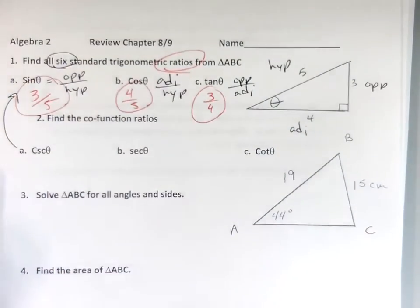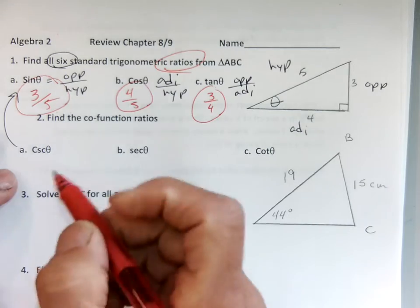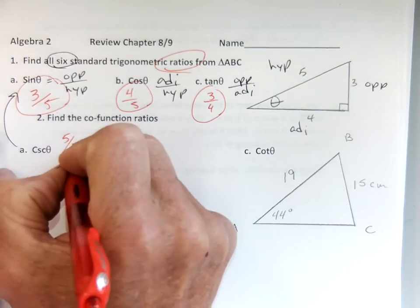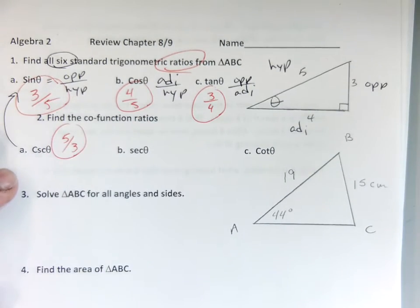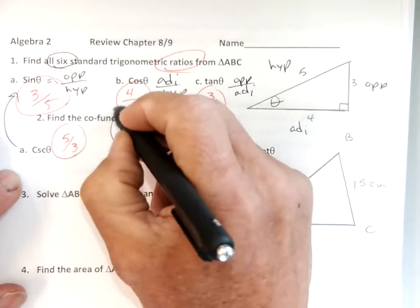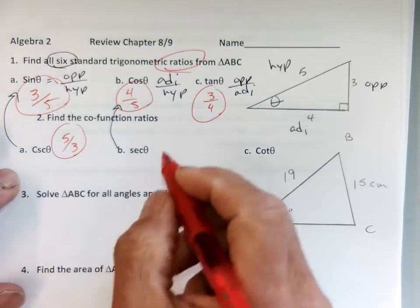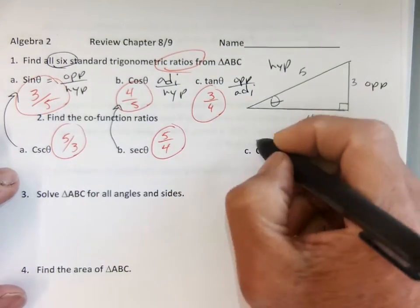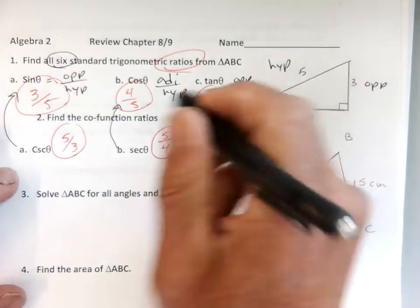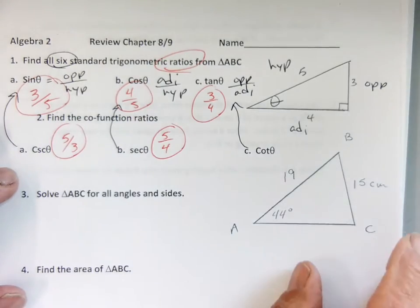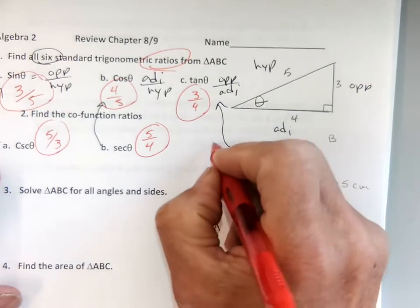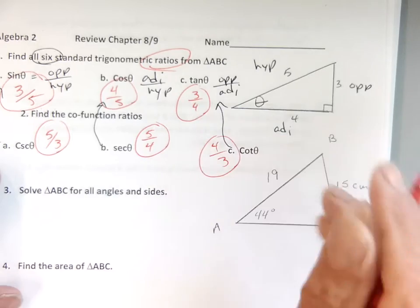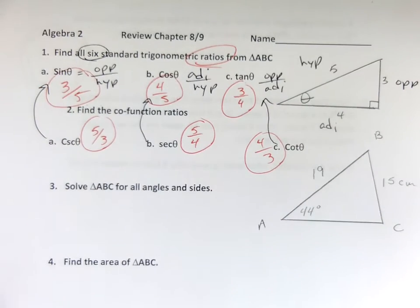Cosecant is just the reciprocal of sine — it's the hypotenuse over the opposite, so it's just going to be 5 over 3. Secant is just the reciprocal of cosine, so it's 5 over 4. And cotangent is just the reciprocal of tangent, so it's 4 over 3. All right, easiest six questions. You're done.